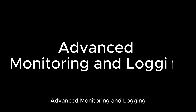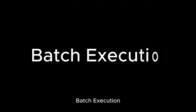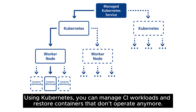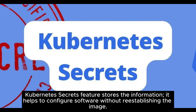Advanced monitoring and logging: Kubernetes simplifies the tracking and monitoring of the performance of the application. Batch execution: using Kubernetes, you can manage CI workloads and restore containers that don't operate anymore. Secrets: the Kubernetes secrets feature stores information and helps configure software without re-establishing the image.